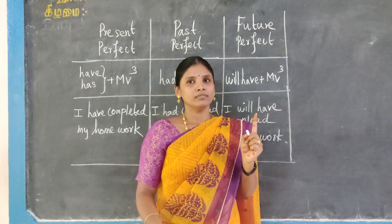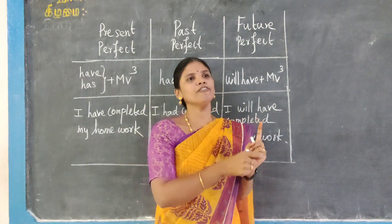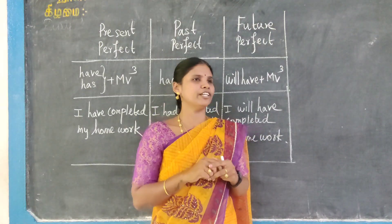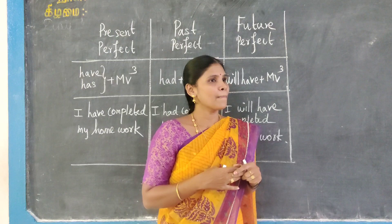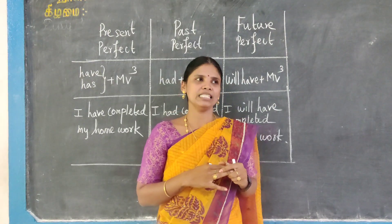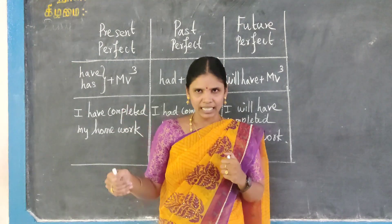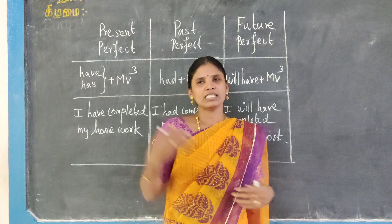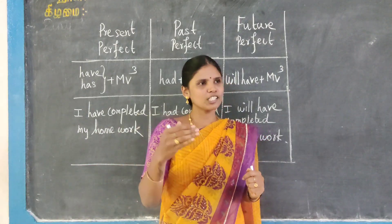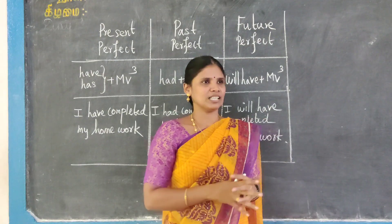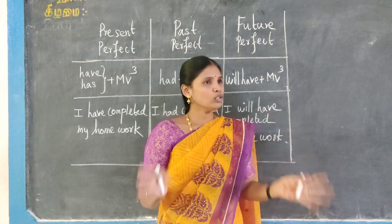There are 12 tenses. With the primary tenses we can derive the following tenses. What are the primary tenses? Simple present, simple past, simple future. Then present perfect, past perfect, future perfect. Then present perfect continuous, past perfect continuous, future perfect continuous. So we have 12 tenses. With the primary tenses we can write all those tenses easily.